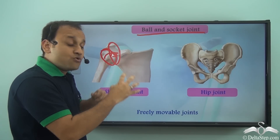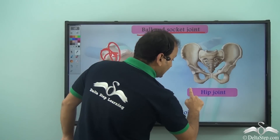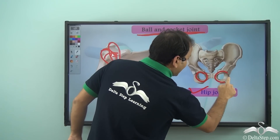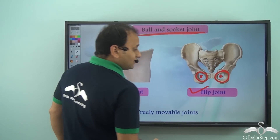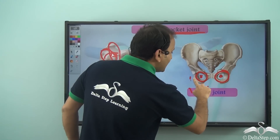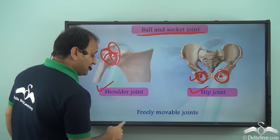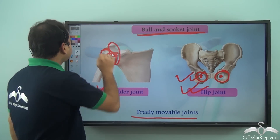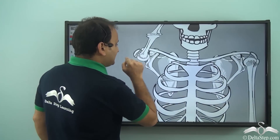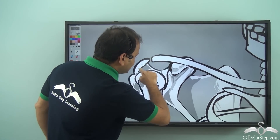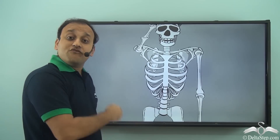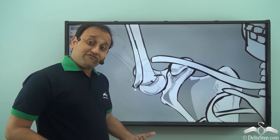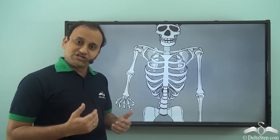Because you have a ball-like structure that fits into a socket-like structure, they are able to move freely. Not only the shoulder joint — even the hip joint is a ball and socket joint. These are the socket-like structures in which the bone fits in, and the movement is very free. It is a freely movable joint. So the ball fits into the socket and we can move our hand freely — that's because of the ball and socket joint here. Similarly, even in the case of our hips, we have a ball and socket joint.